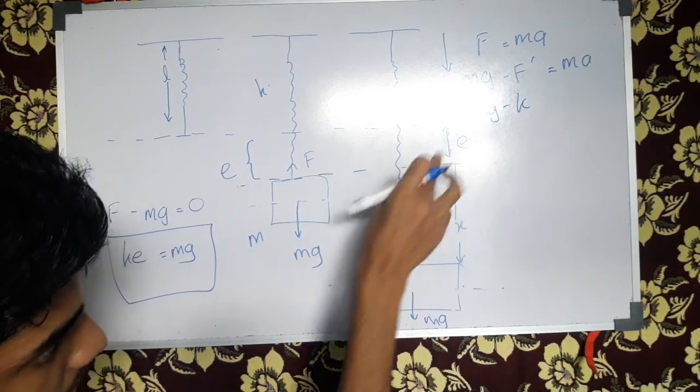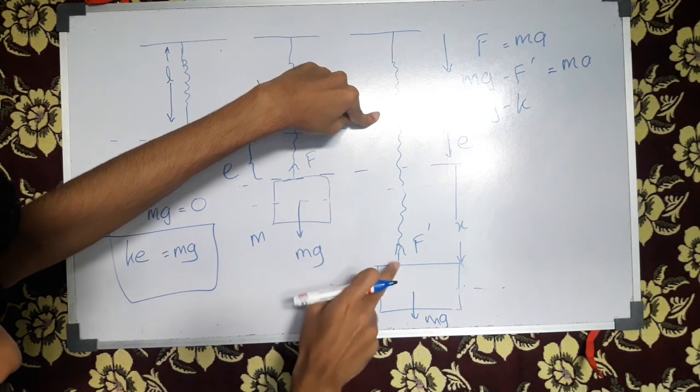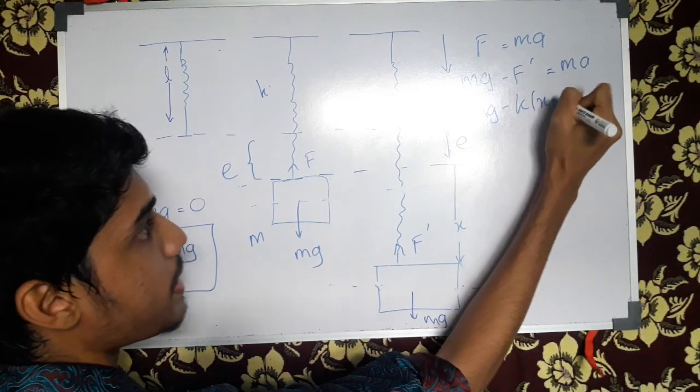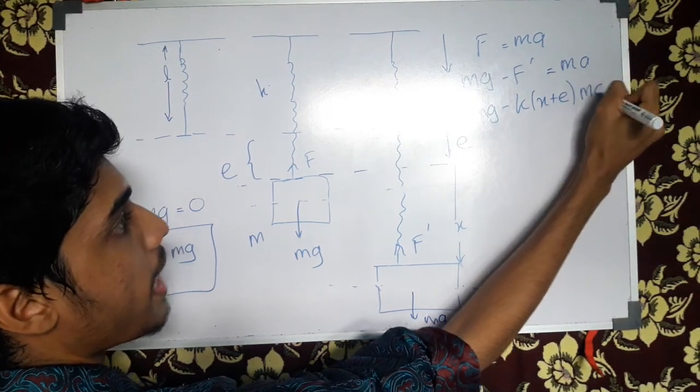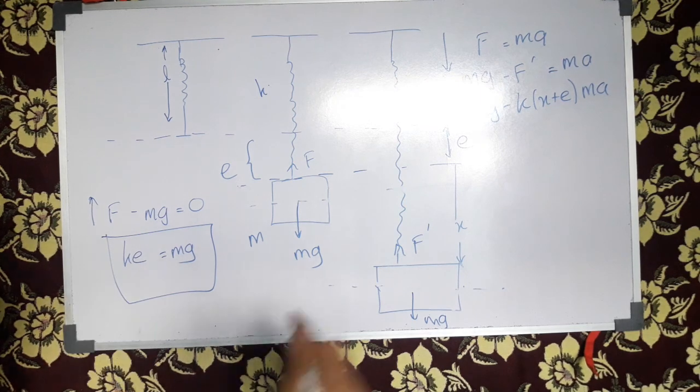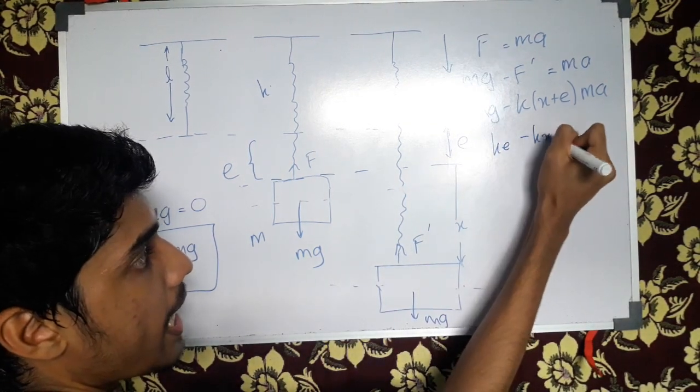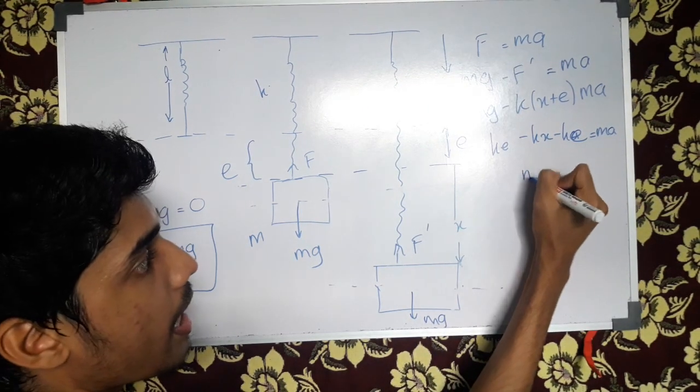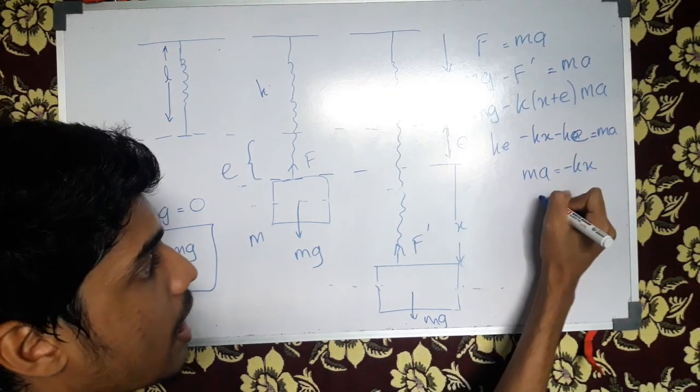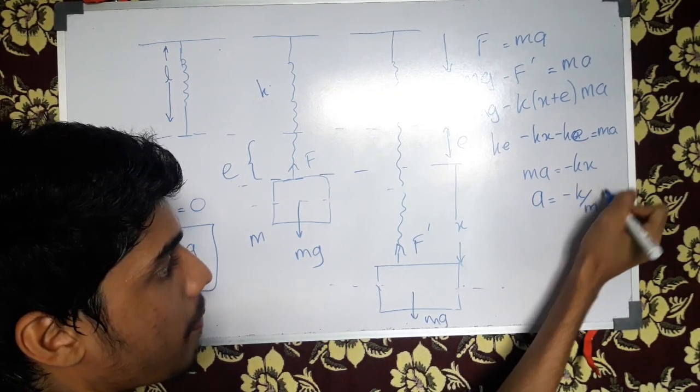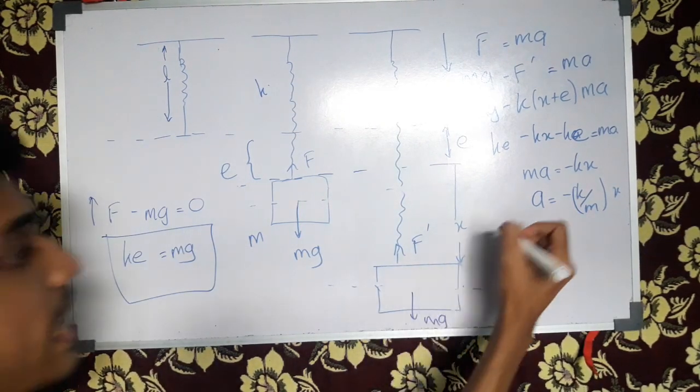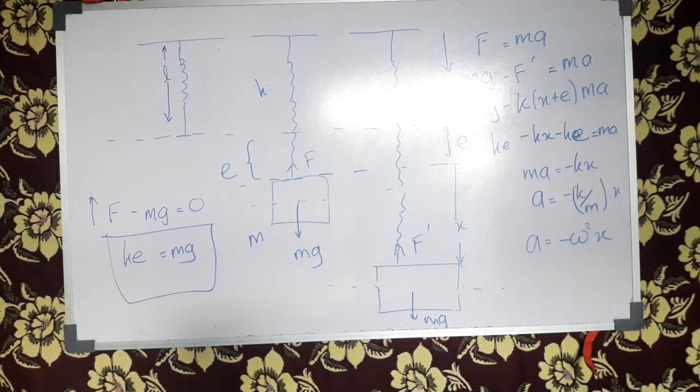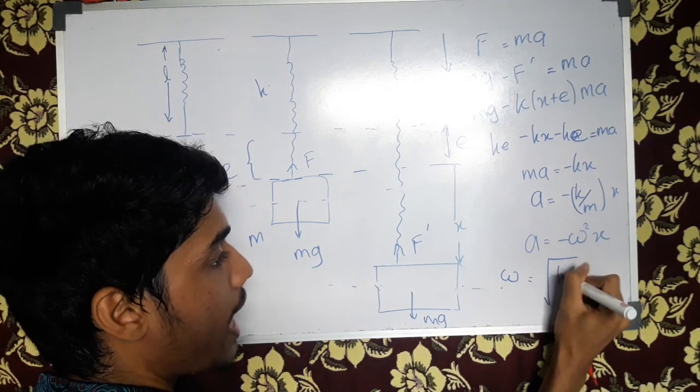X double dot equals M, X further equals K over M into X. Here's the sum omega minus omega squared into X. If we tell you, here's the sum root of K over M.